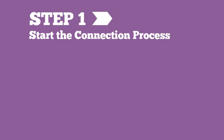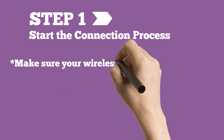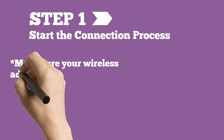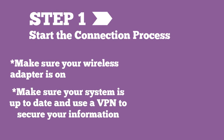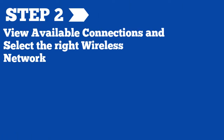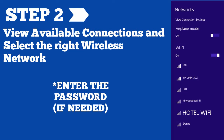Step 1: Start the connection process. Make sure your wireless adapter is on, make sure your system is up to date, and use a VPN to secure your information. Step 2: View available connections and select the right wireless network.